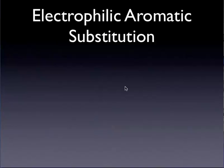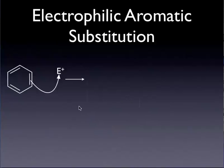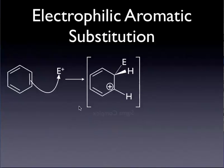Let's take a look at electrophilic aromatic substitution and see what the mechanism of this is. If we consider a benzene ring and take one of those double bonds and react that with our electrophile, we generate what's called a sigma complex. What we've done is generate a sigma bond with our electrophile at the expense of the pi electrons in the aromatic ring.